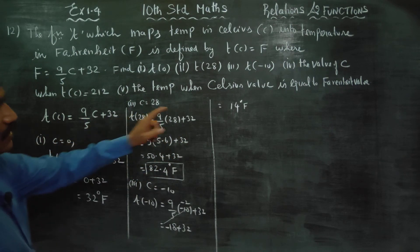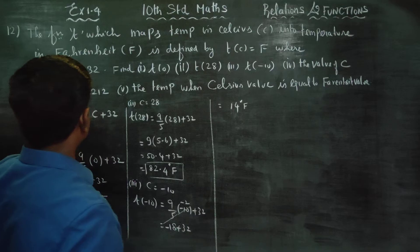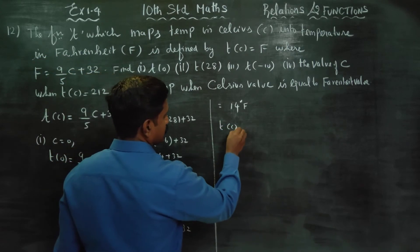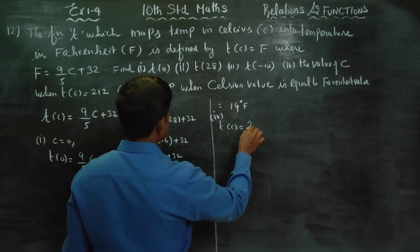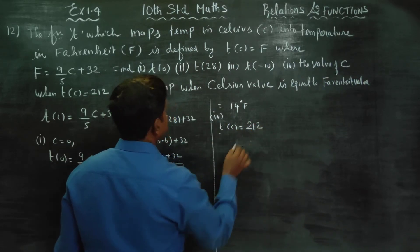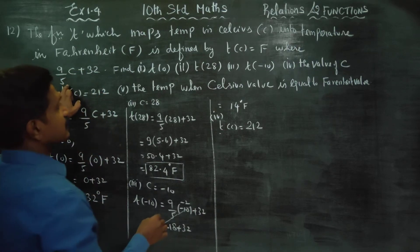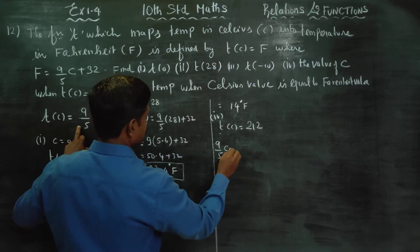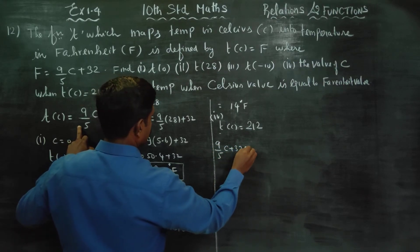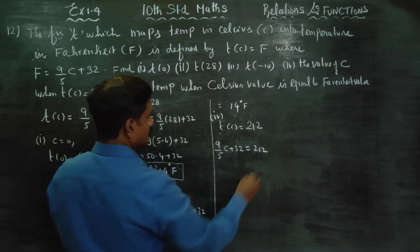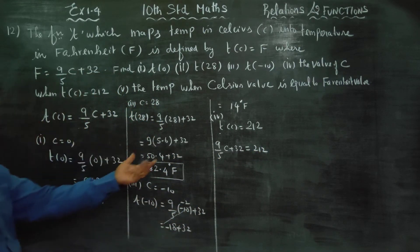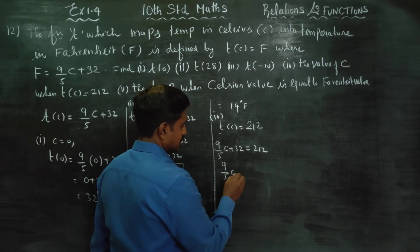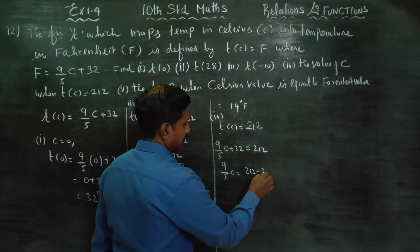Sum number 4: find the value of C when T of C is equal to 212. T of C is equal to 212, and the formula is 9 by 5 C plus 32 is equal to 212. So 9 by 5 C is equal to 212 minus 32.